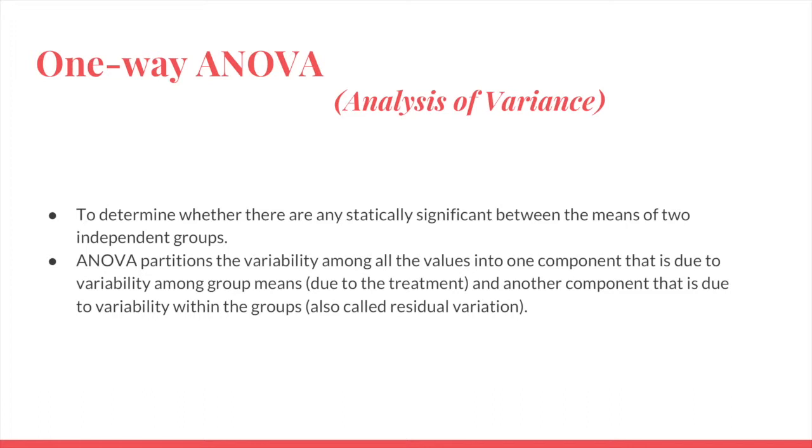Hello guys, today I'm going to talk about one-way ANOVA and how to solve it on SPSS. So the one-way ANOVA is also called analysis of variance. It's to compare the mean of two or more independent groups in order to determine whether there is statistical evidence that the associated population means are significantly different.